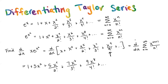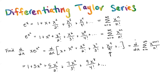That would be our Taylor series expansion of the derivative of x times e to the x squared. We just take the derivative term by term, and it's really nice and easy because we know how to take derivatives of polynomials.